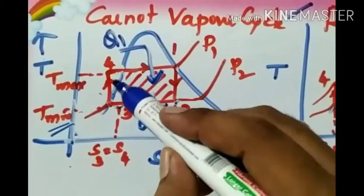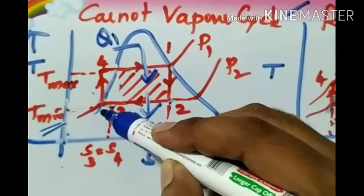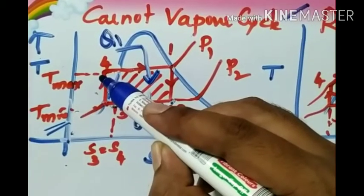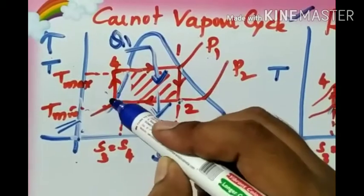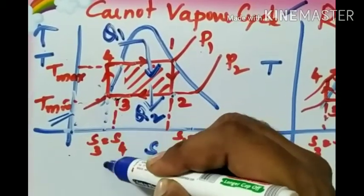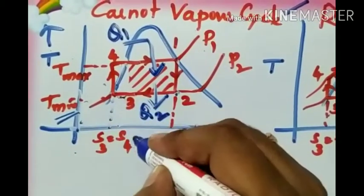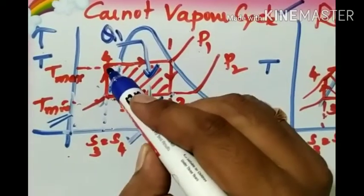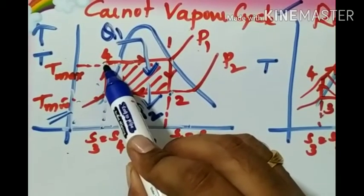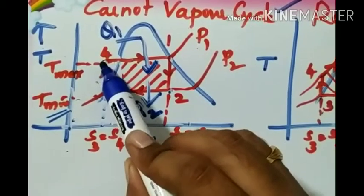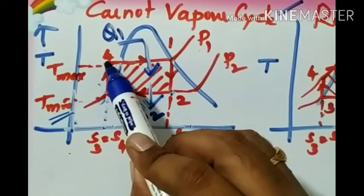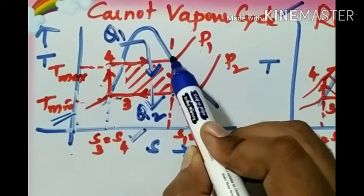The last process in the Carnot cycle, 3 to 4, occurs in the compressor. Here, the saturated water is compressed to the required pressure existing in the boiler, that is pressure P1. The compression occurs reversibly and adiabatically such that entropy remains constant during compression — S3 equals S4. After compression, the state of the liquid is a sub-cooled liquid, which is then passed to the boiler to start consuming heat and convert into vapor, completing the cycle.